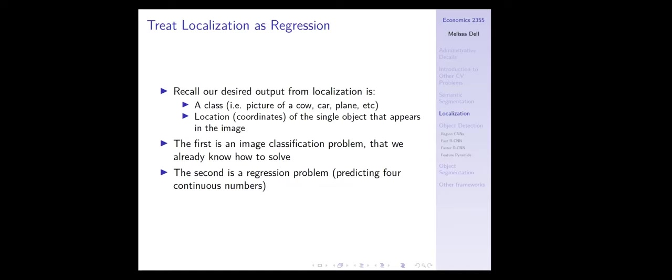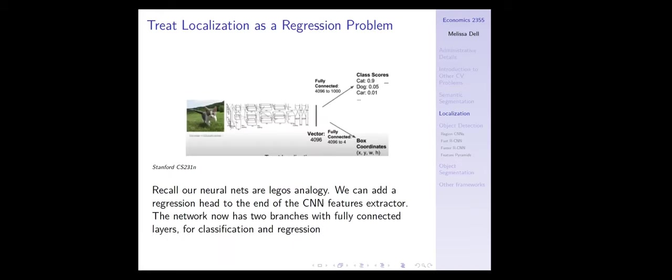The desired output from localization is a class and coordinates for that single object as it appears in the image. The first thing is just an image classification problem, which we already know how to do. The second is a regression problem where we need to predict four continuous numbers making up the coordinates of that object's location. Neural networks are just like Legos — we can stack them and add different components. We can take a standard CNN backbone, shown here as AlexNet (in practice you'd use ResNet), and add a classification head.